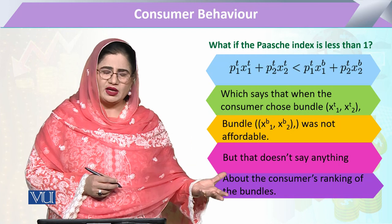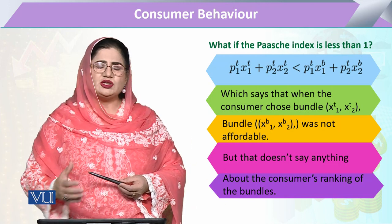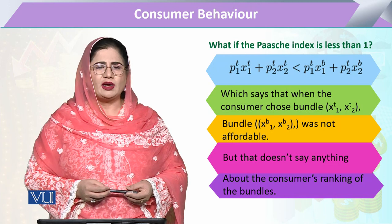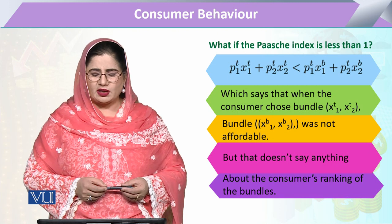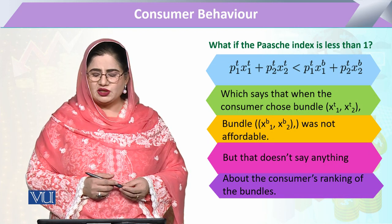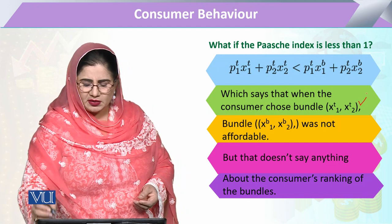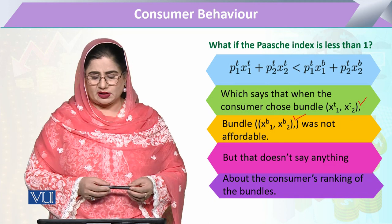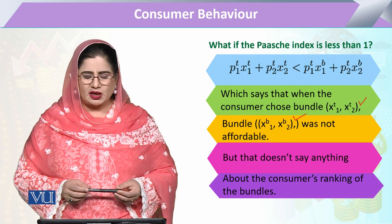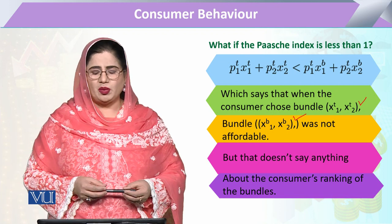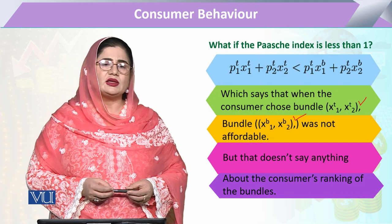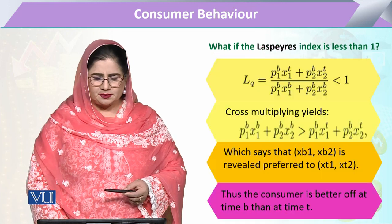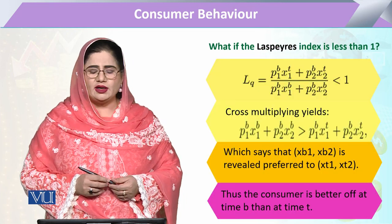Similarly, we can take the less than one condition. If the Paasche index is less than one, and we cross multiply to assess, this shows that the consumer preferred the time T bundle but could not afford the base period bundle. The bundle ranking is thus revealed, and if the Paasche index is less than one, it means the consumer is worse off today compared to the previous period.